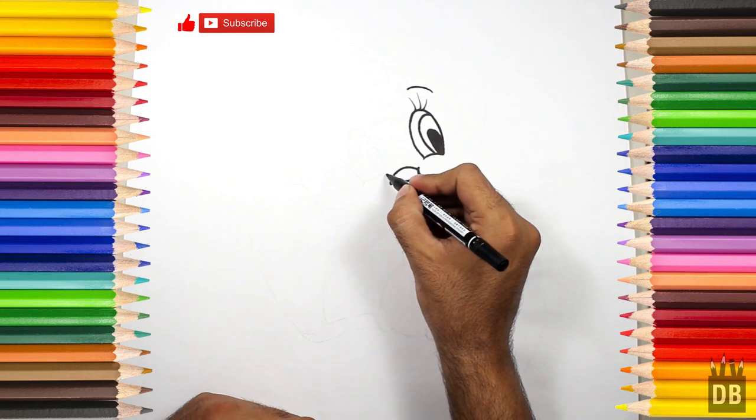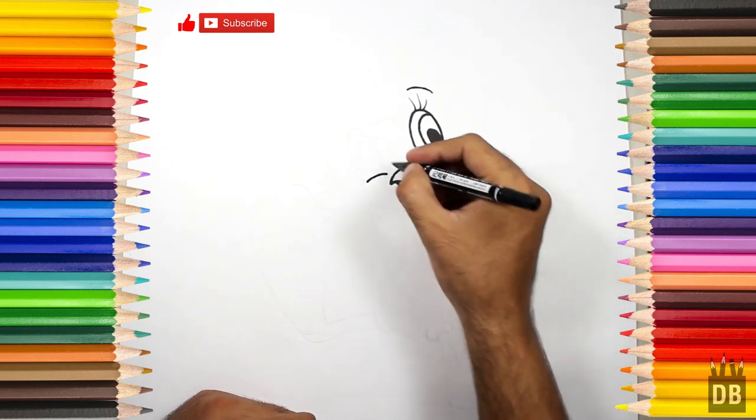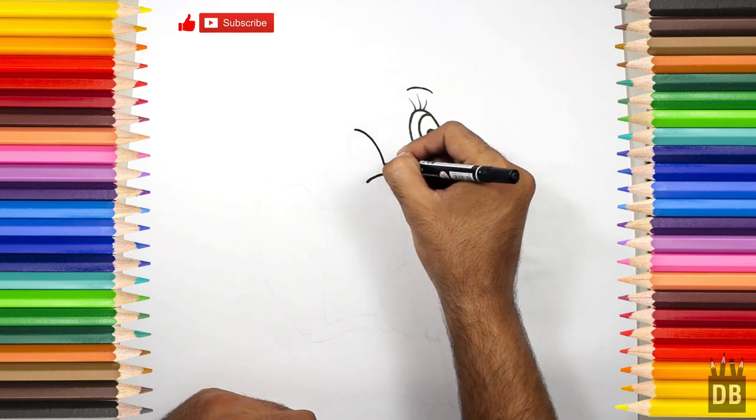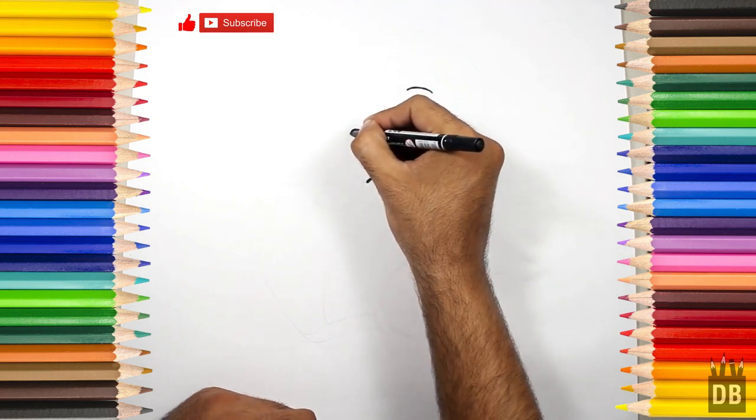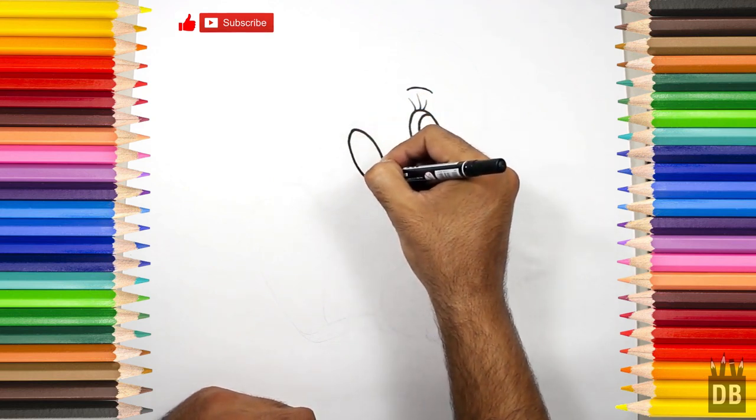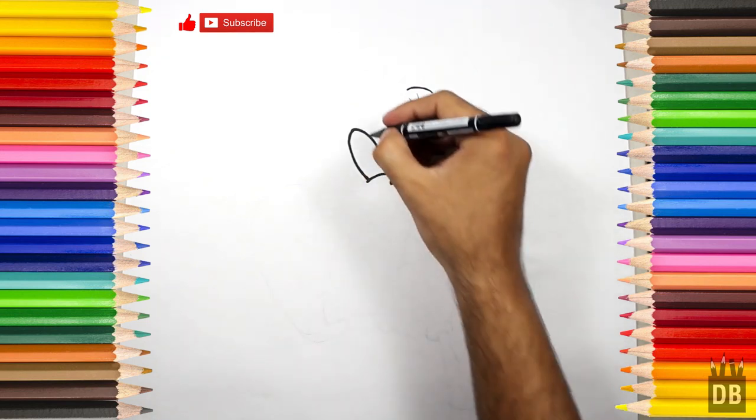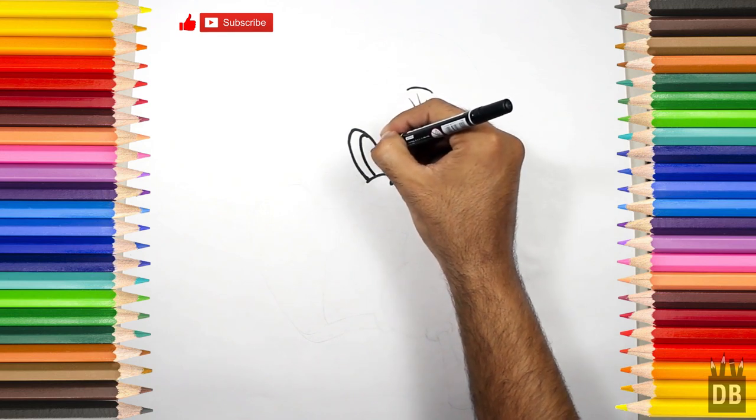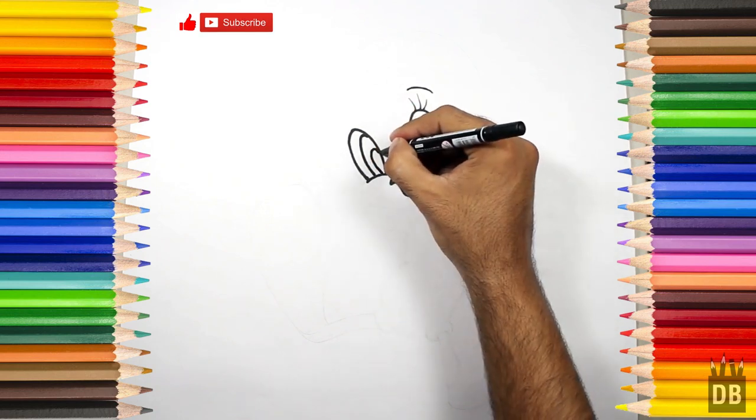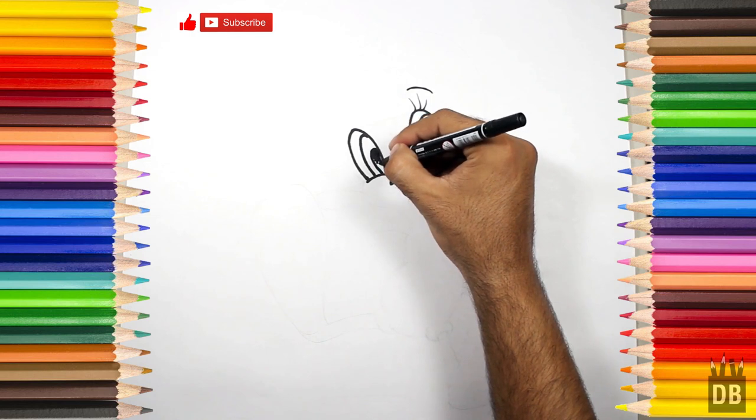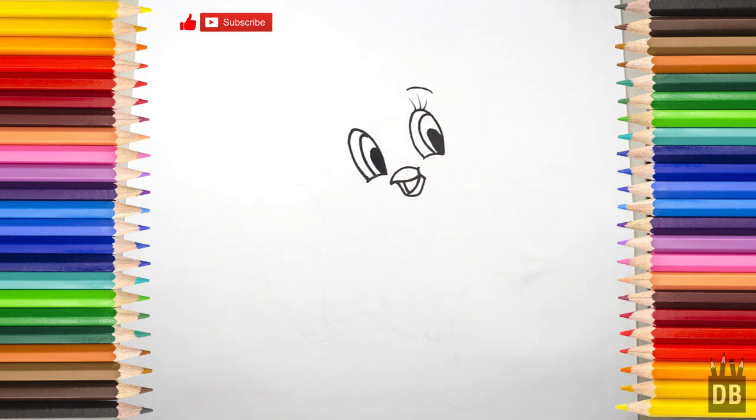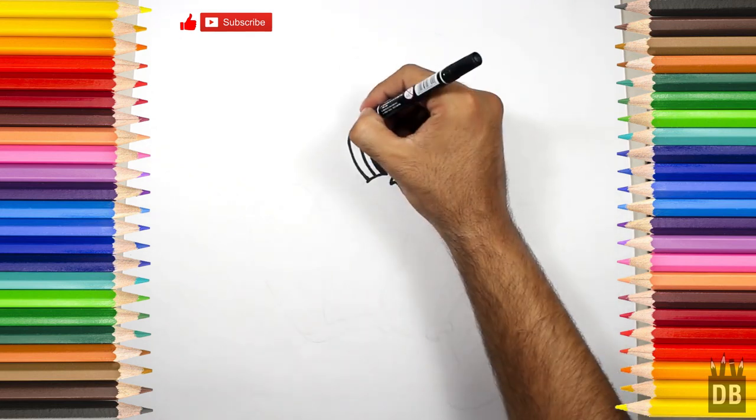From here we will make a curve line like this. Now we are going to make this eye. We will color it in black. You can use pencil color, watercolor, poster colors, markers, anything you want. And now the eyebrows.